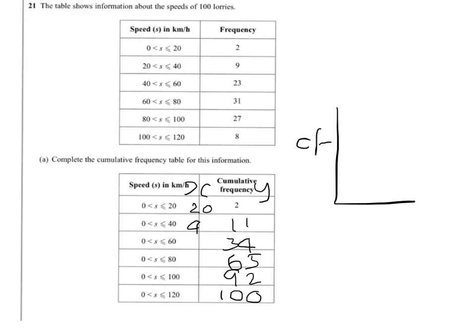And that is the most common mistake with these. So I'll write them all in so you can see where the coordinates are going to have to plot. And finally 120. So we have 6 points to plot. So we're plotting 20 with 2, 40 with 11, 60 with 34, 80 with 65, 100 with 92, and 120 with 100.